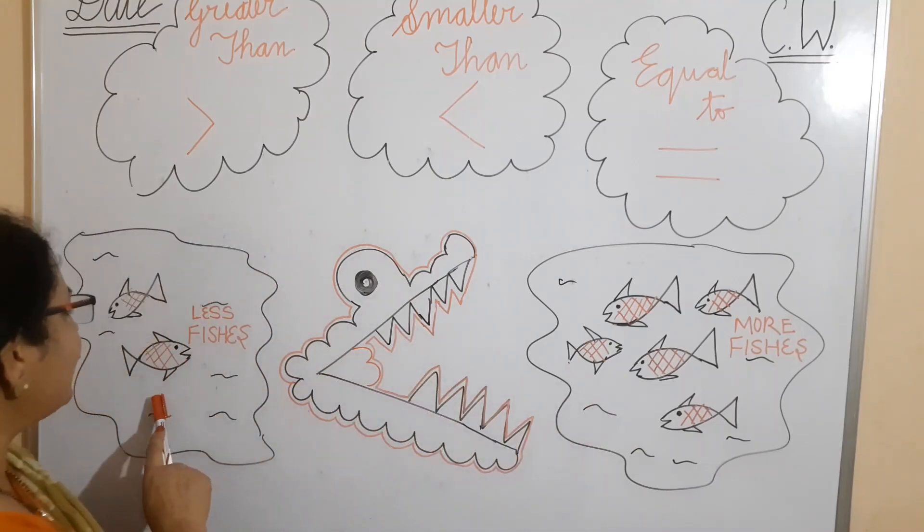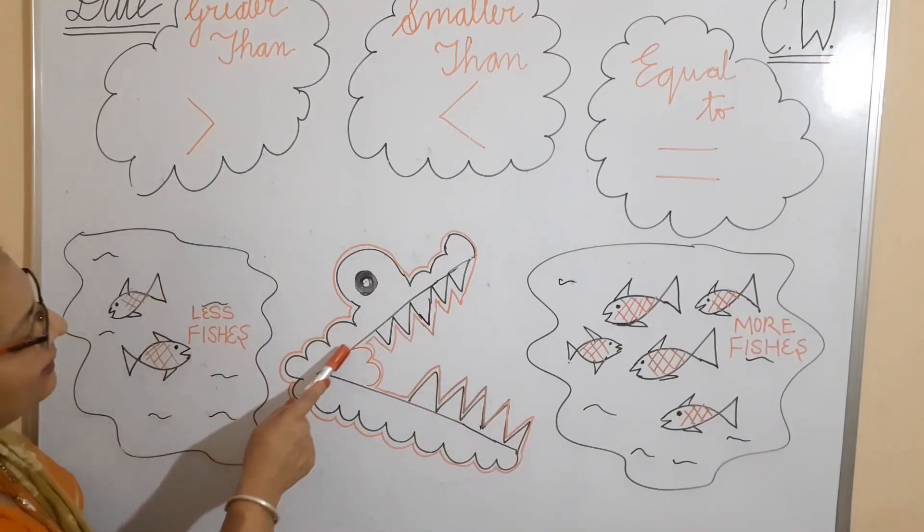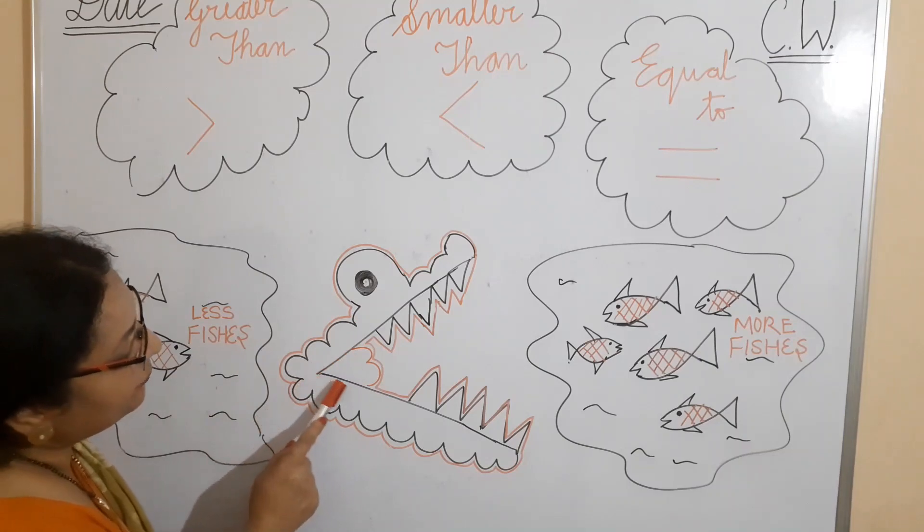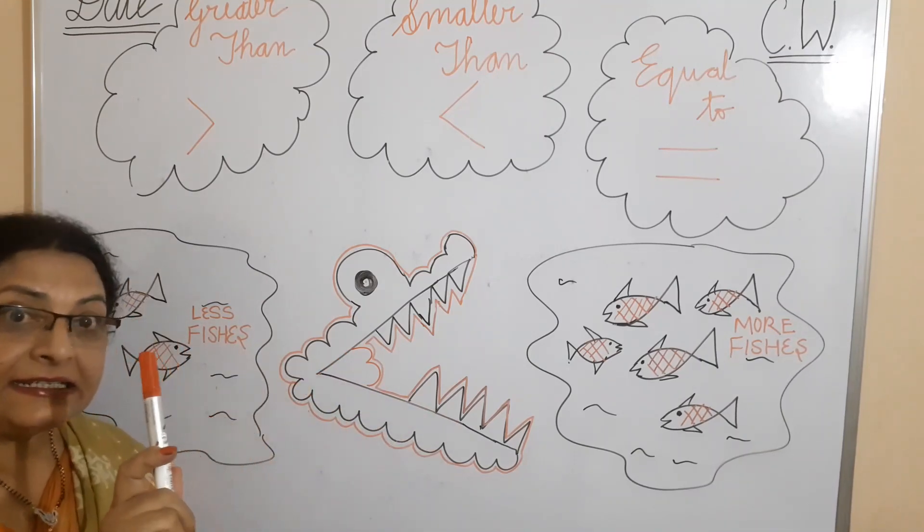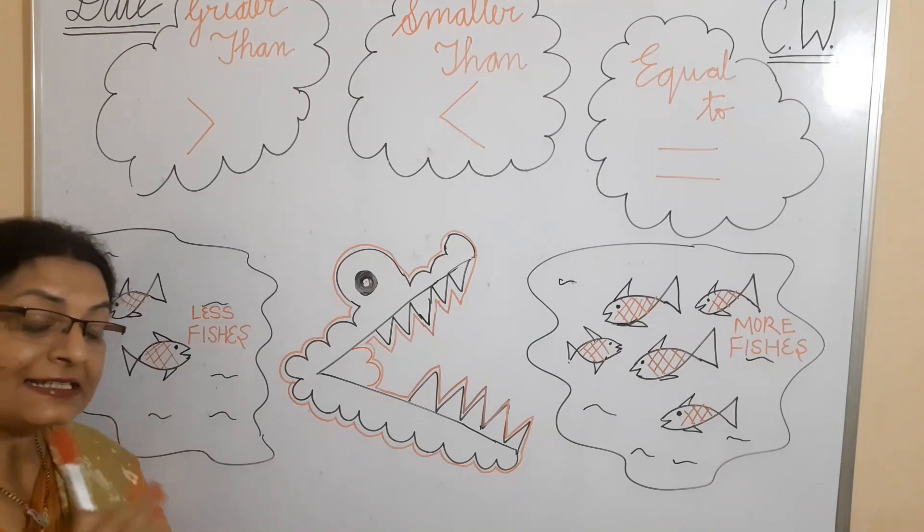But if there are less fishes, he turn his face towards the opposite side. It means he doesn't want to eat less numbers.